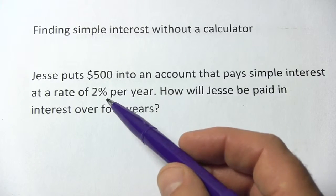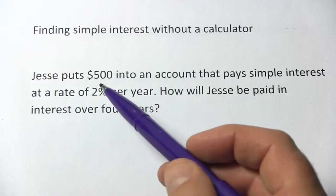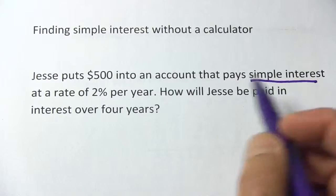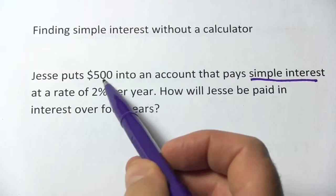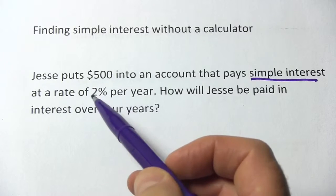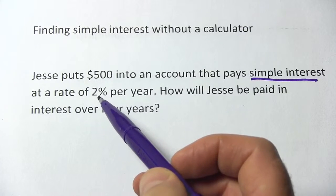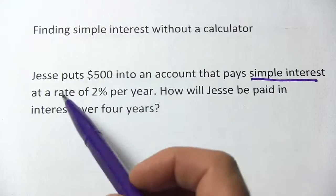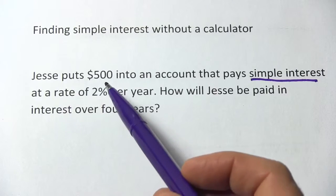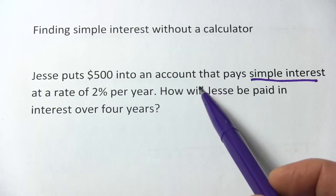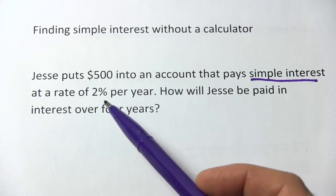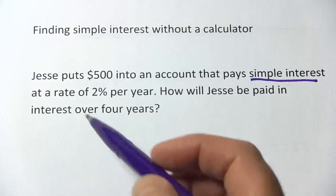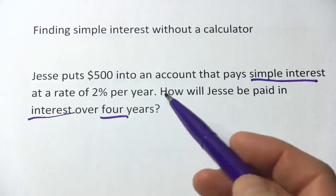We need to calculate the amount of simple interest earned on some money put into an account. The way simple interest works is that whatever amount you put in at the beginning, you earn a percentage of that money each year as interest. Jesse puts $500 into an account that pays simple interest at a rate of 2% per year, and we want to find out how much Jesse will be paid in interest over four years.